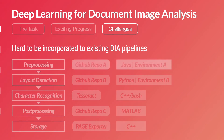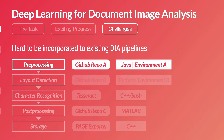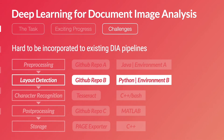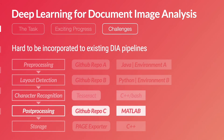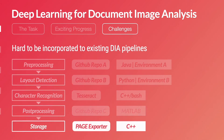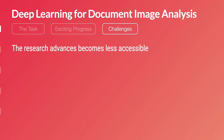In DIA pipelines, the first step might be pre-processing, and you might need to download some code from GitHub repo A written in Java and set up the environment accordingly. Subsequently, you need different models for layout detection, downloading from repo B, which is written in Python and requires another environment. Similarly, for OCR recognition, post-processing, and storage, you might need to download code bases from different places and set up different environments.